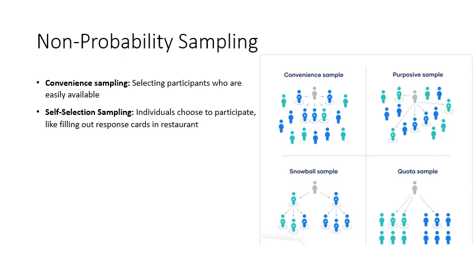The most likely group to fill out the card are those who had a bad experience — they're angry and want to respond. The second group are those who had a really good experience. People who had a neutral experience are least likely to fill out a response card. That's self-selection sampling, not shown in the picture, but very commonly used.